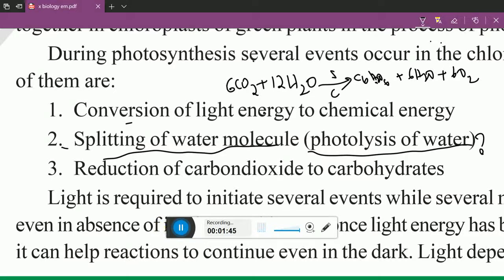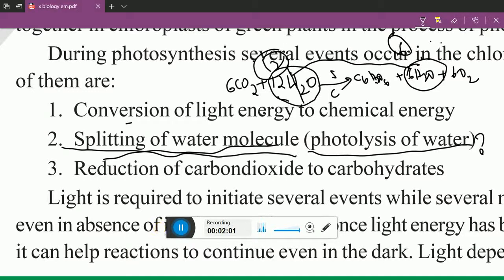So second equation shows splitting of water molecule. Splitting of water molecule means dividing. So 12 moles of water is divided into 6. So it is splitting. 12 elements have divided into 6 elements, half of it. This splitting of water molecules, this process is called photolysis. With the help of light, breaking down of water is happening here.